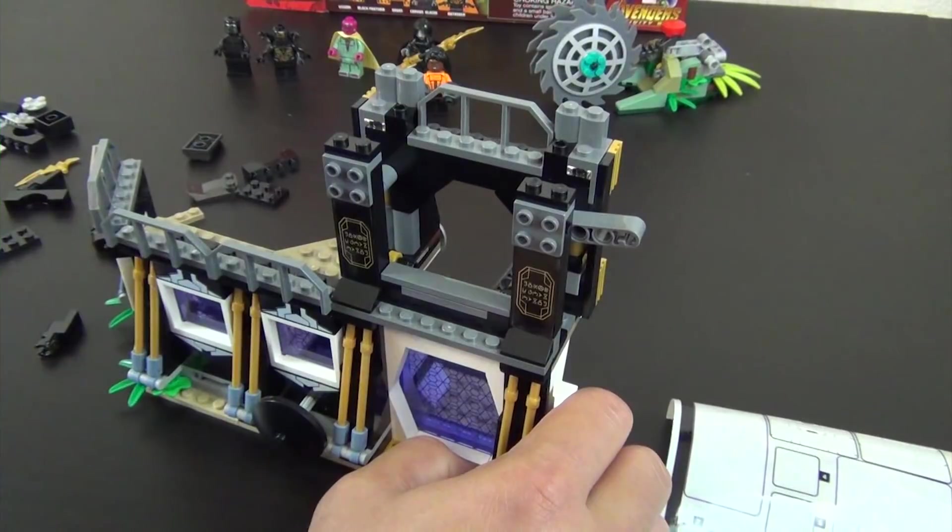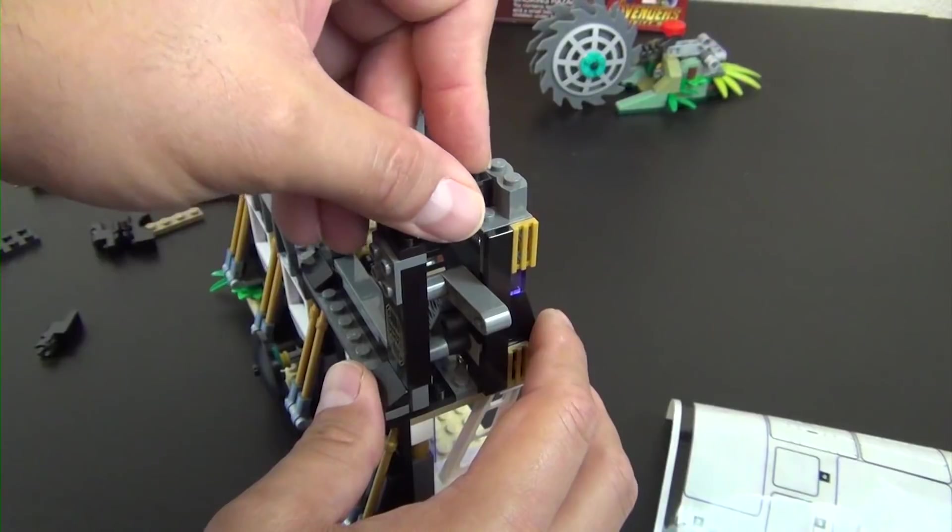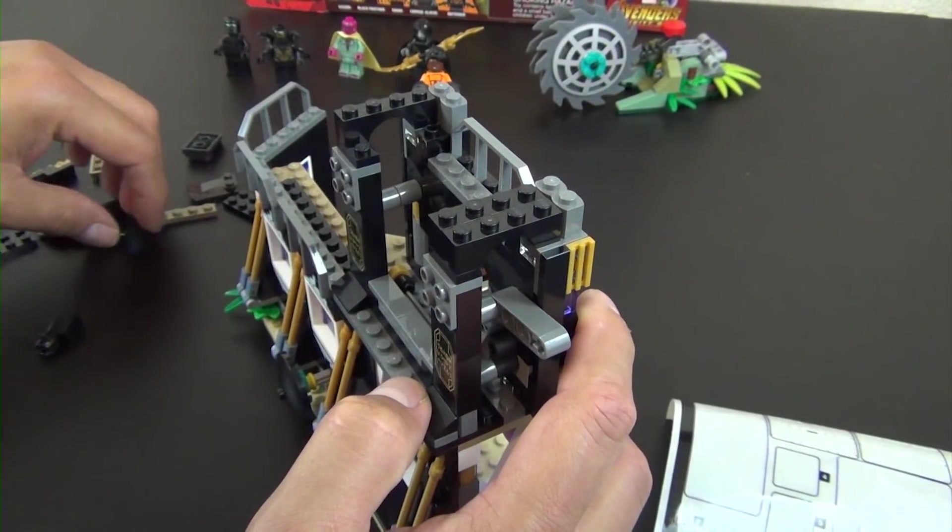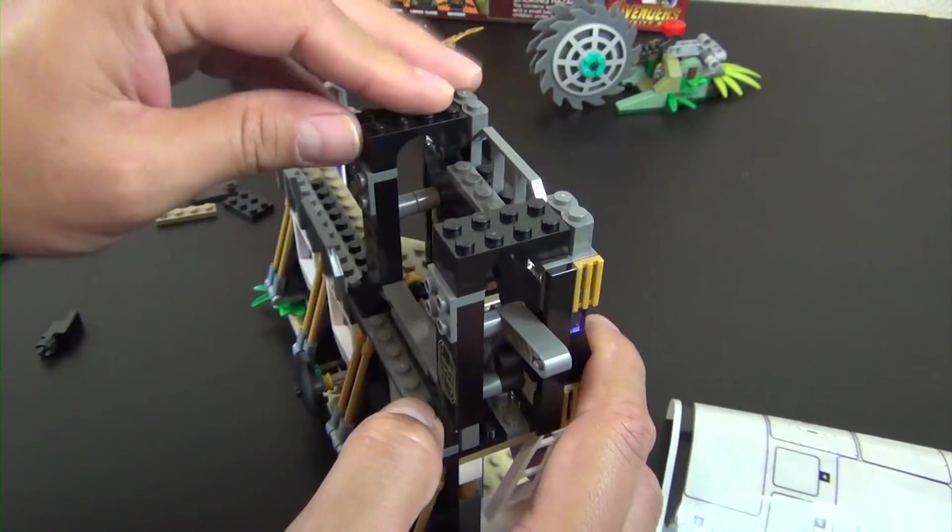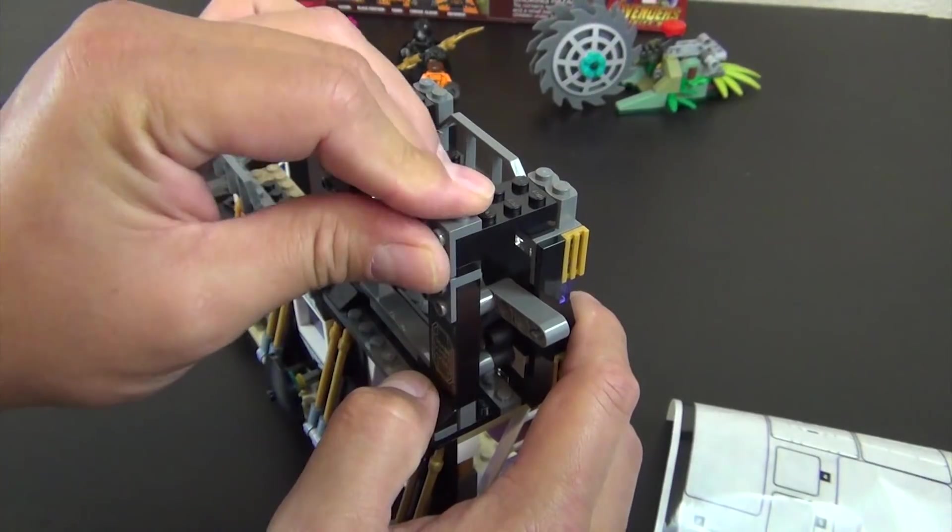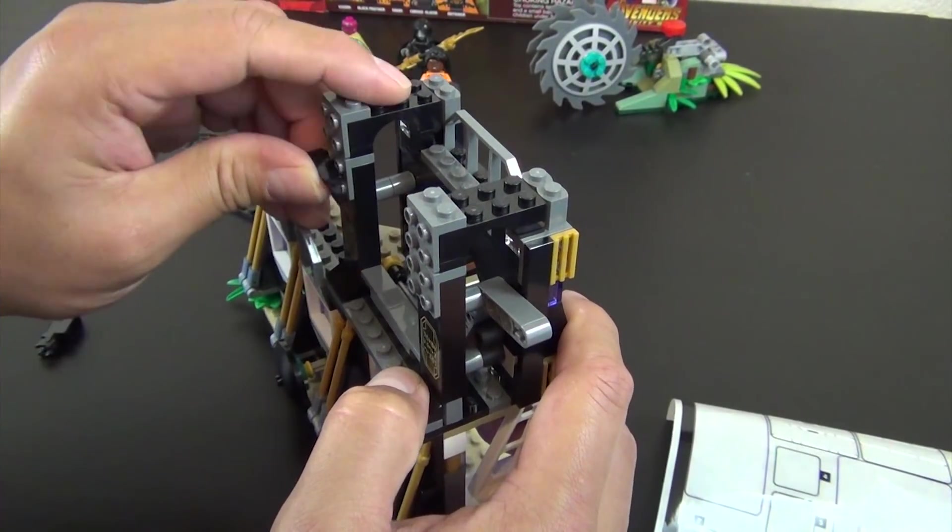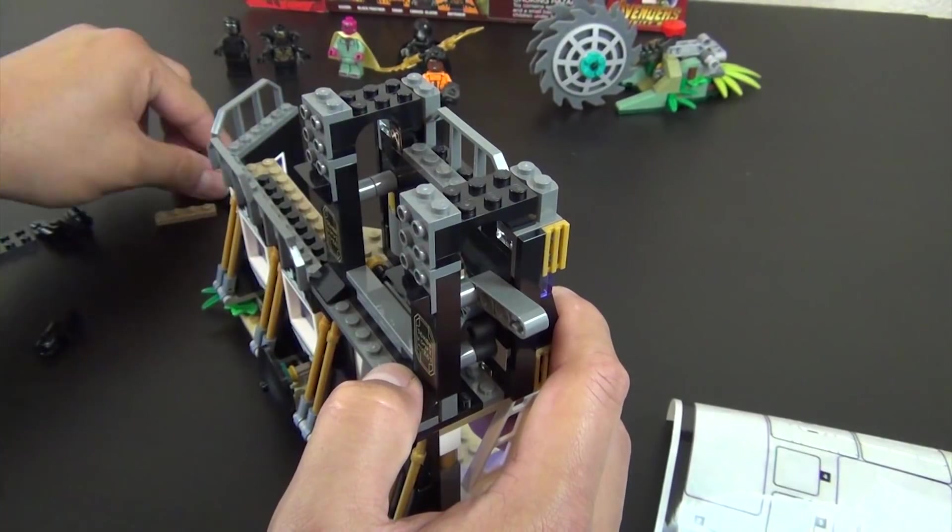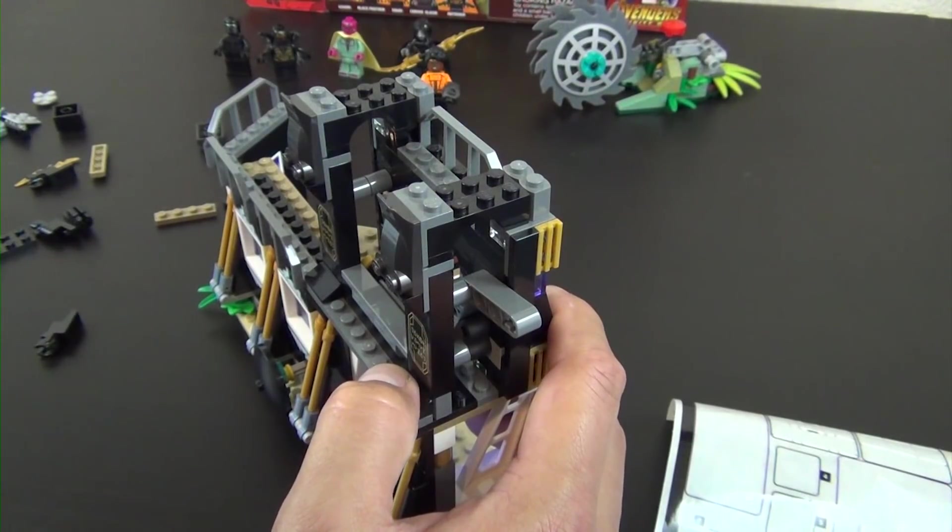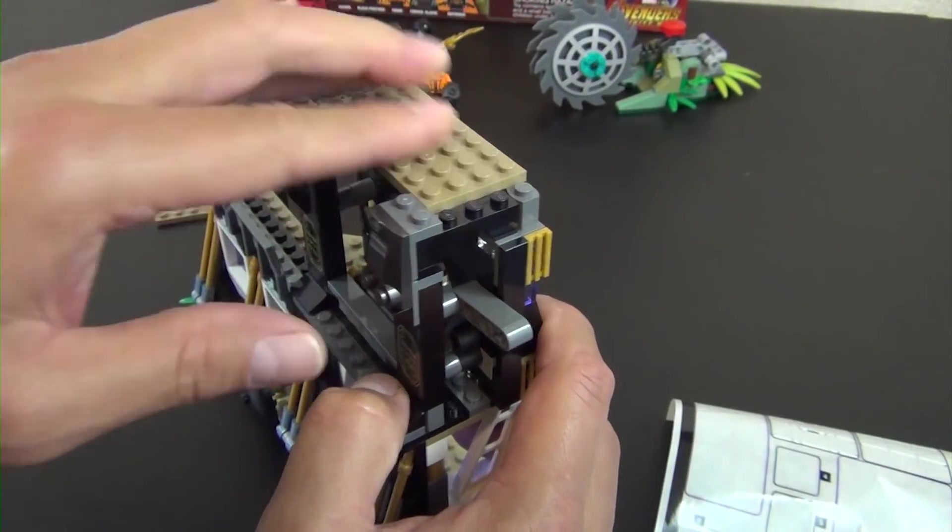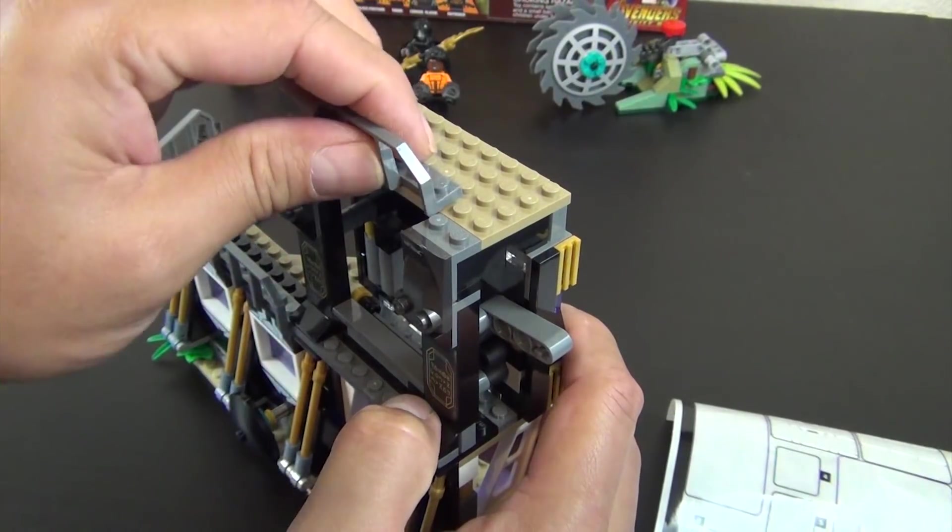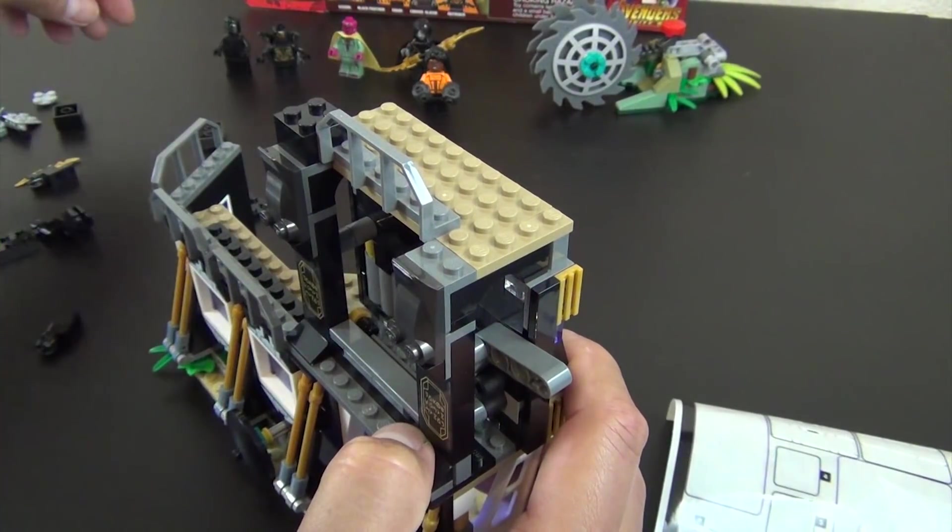Now we have four one-by-four arched bricks. One, two, three, and four. Two more brackets. Two one-by-two G slopes. Couple plates on the top, and a piece, and a couple bricks.